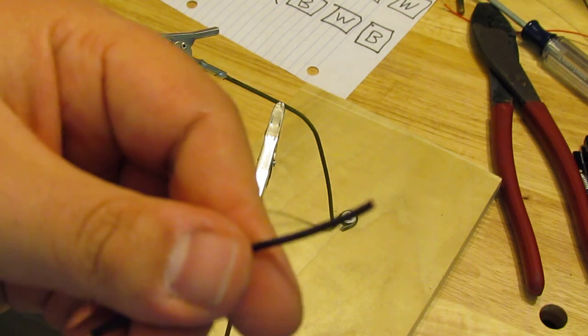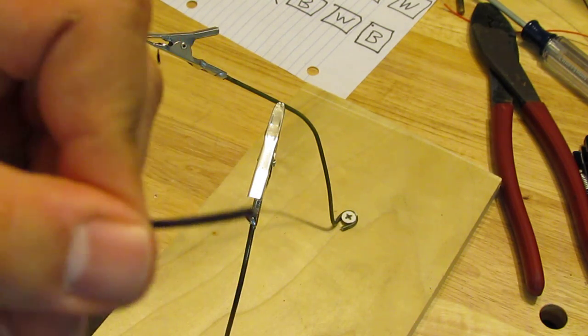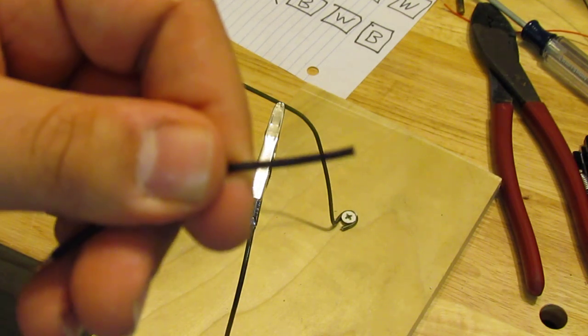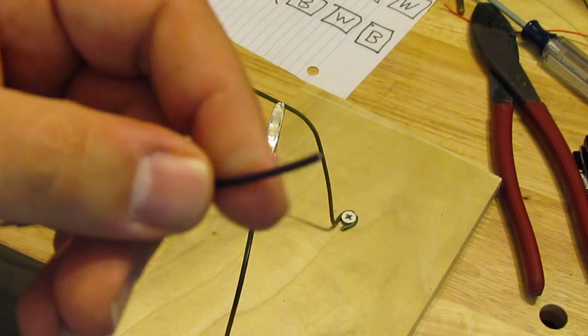Since the LEDs are already tinned, you want to tin the wire so it attaches a lot quicker and it will securely attach to it without having the risk of falling off.